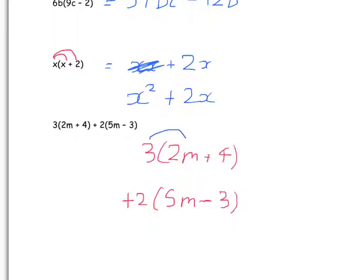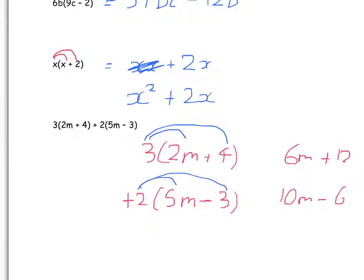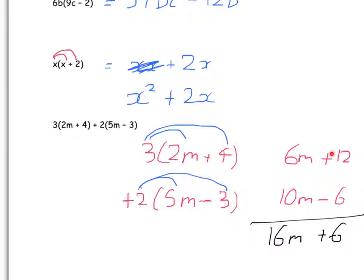3 times 2m is 6m. 3 times 4 is plus 12. Now 2 times 5m is 10m, and 2 times minus 3 is minus 6. Now we're going to add together all our like terms: 6m add 10m is 16m, and 12 minus 6 is plus 6. So that is the fully expanded and simplified version of our original expression. I always write it out as two separate brackets and then collect together the like terms.